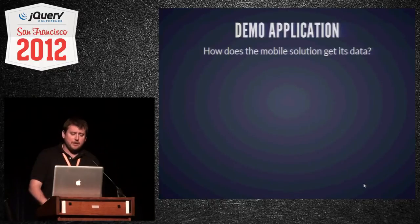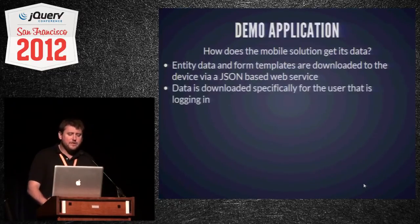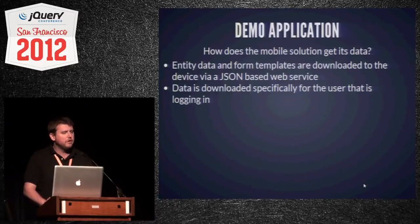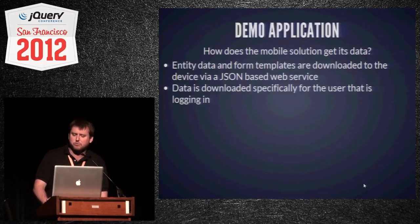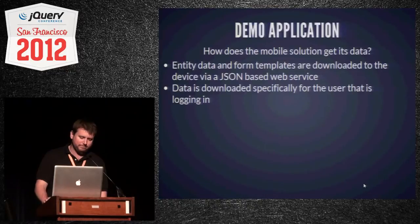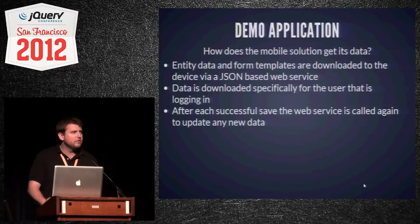After logging in, we download entity data and form templates via a JSON-based web service. The data downloaded is specifically for the logged-in user to avoid size issues when storing on device. We might bring back 50 entities for 50 inspections but only two form templates since many entities are similar. After each successful save, the web service is called again to update new data and remove completed inspections to save space.